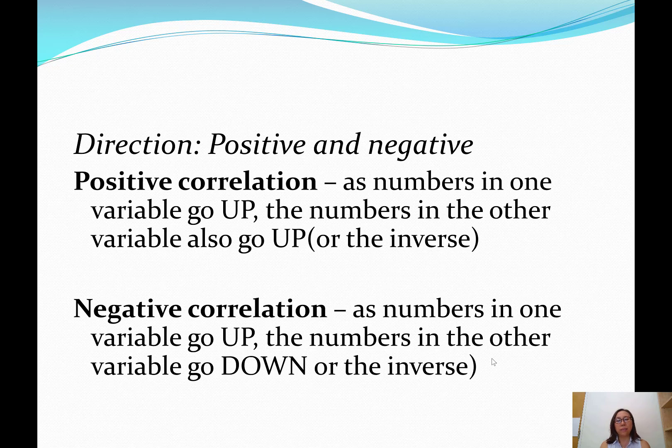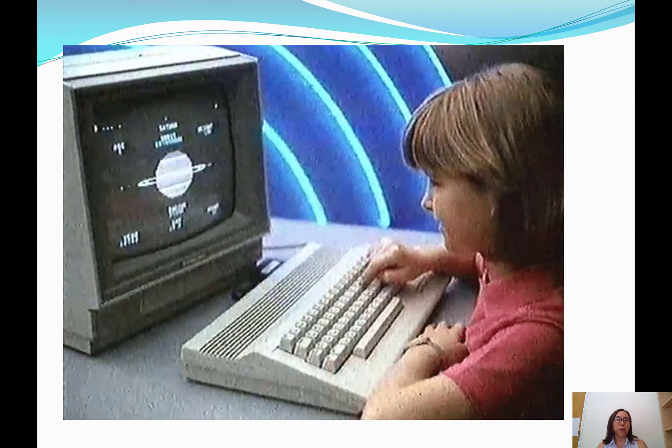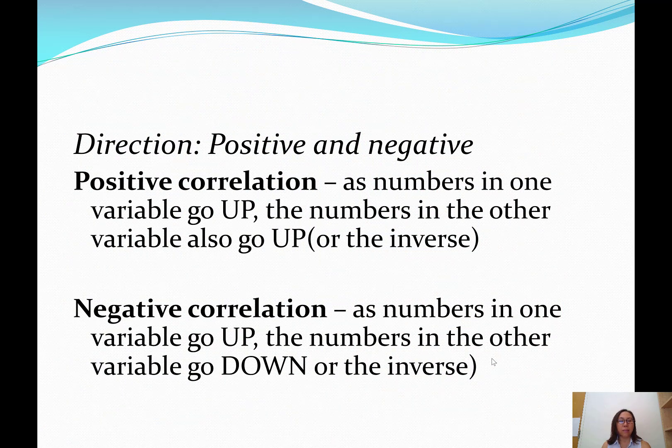Negative correlation is such that as numbers in one variable go up, the numbers in the other variable go down or the inverse. An example would be the number of hours a child spends on computer games at home and how that's related to scores at school. The more hours spent on computer games, the lower the scores may be. Or the inverse may be true that as the child's number of hours of computer games goes down, the scores may go up. That's a negative correlation where as one goes up, the other goes down.